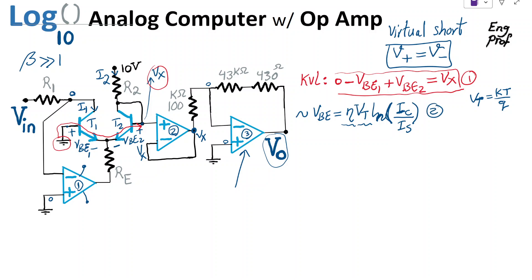I'm going to substitute equation 2 in 1, so using 1 and 2, I can say Vx is eta Vt natural logarithm of I2 over Is minus eta Vt ln of I1 over Is. Therefore Vx is equal to eta Vt ln of I2 over I1, and the nice thing is, Is cancel out, so the sensitivity to thermal variation coming from saturation current disappears.